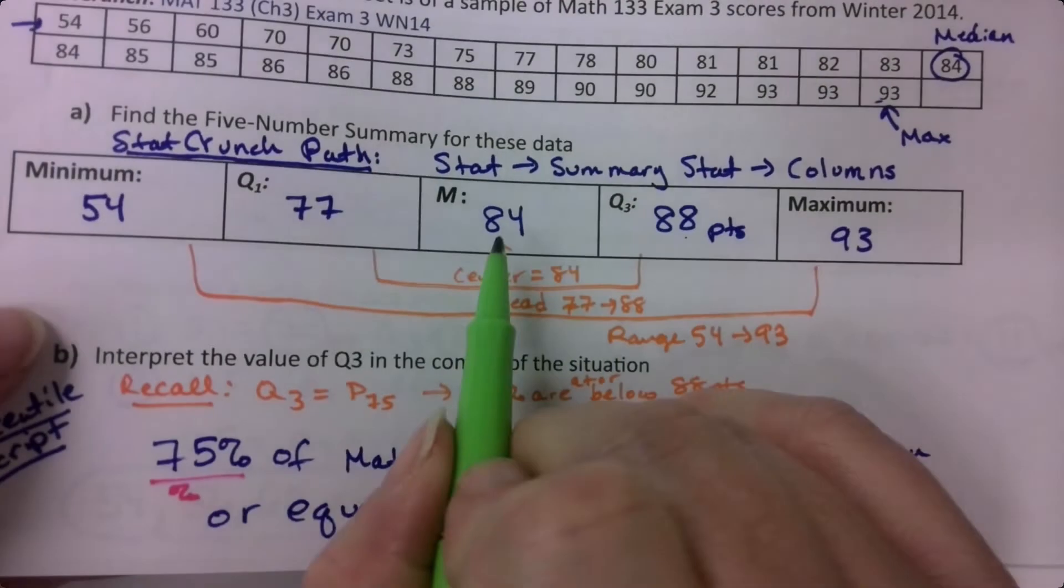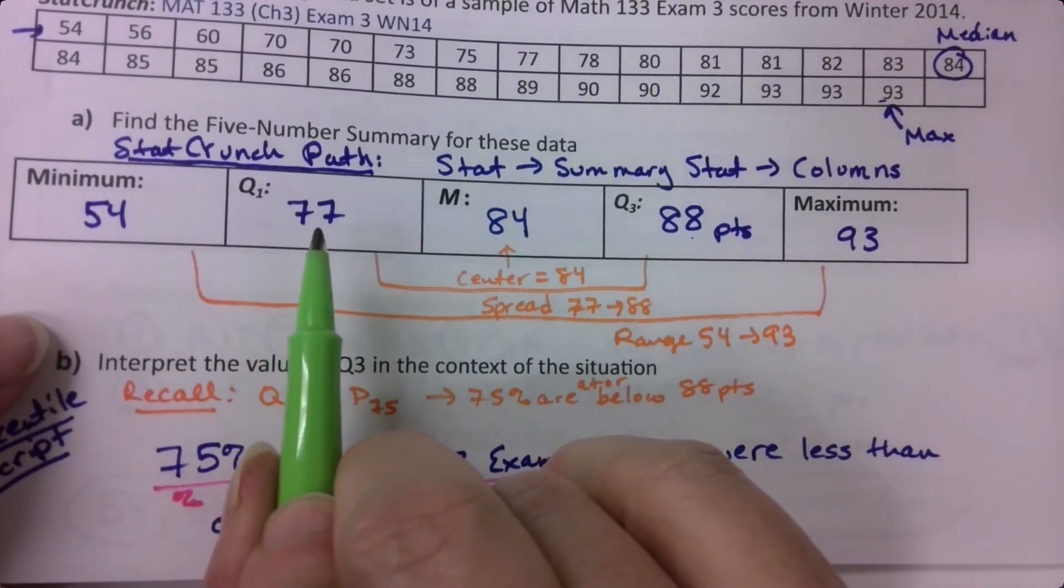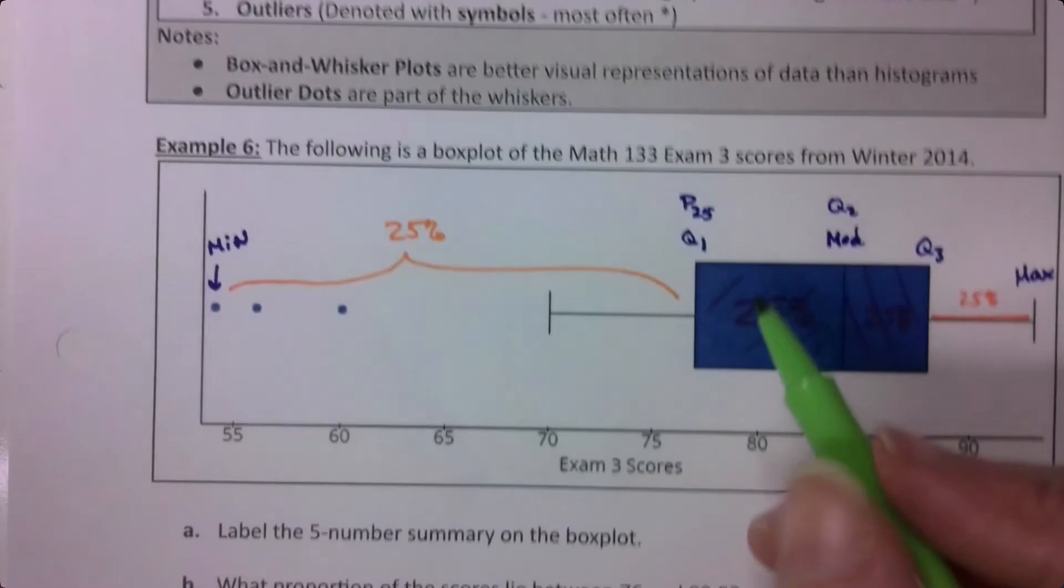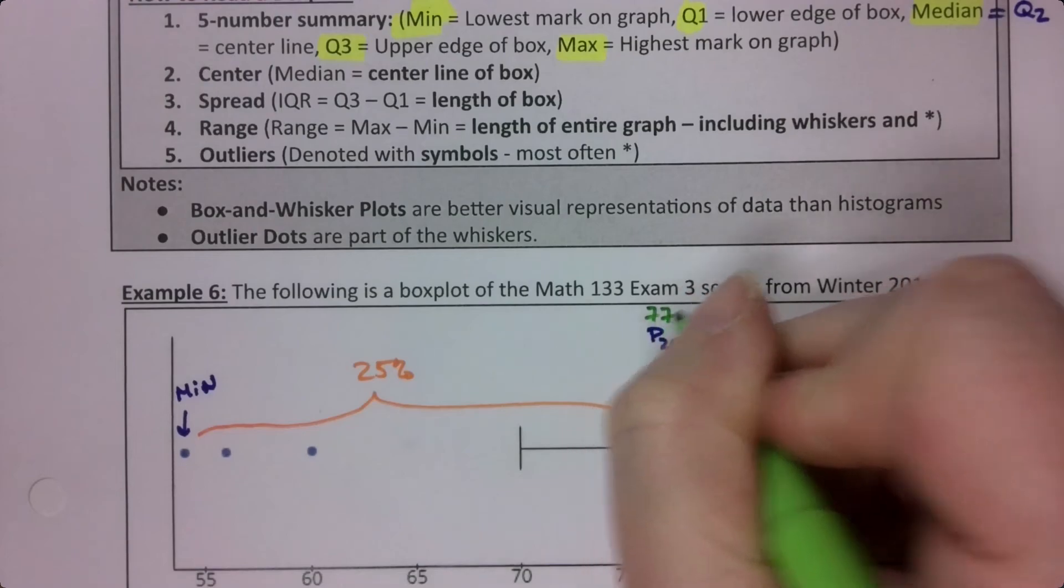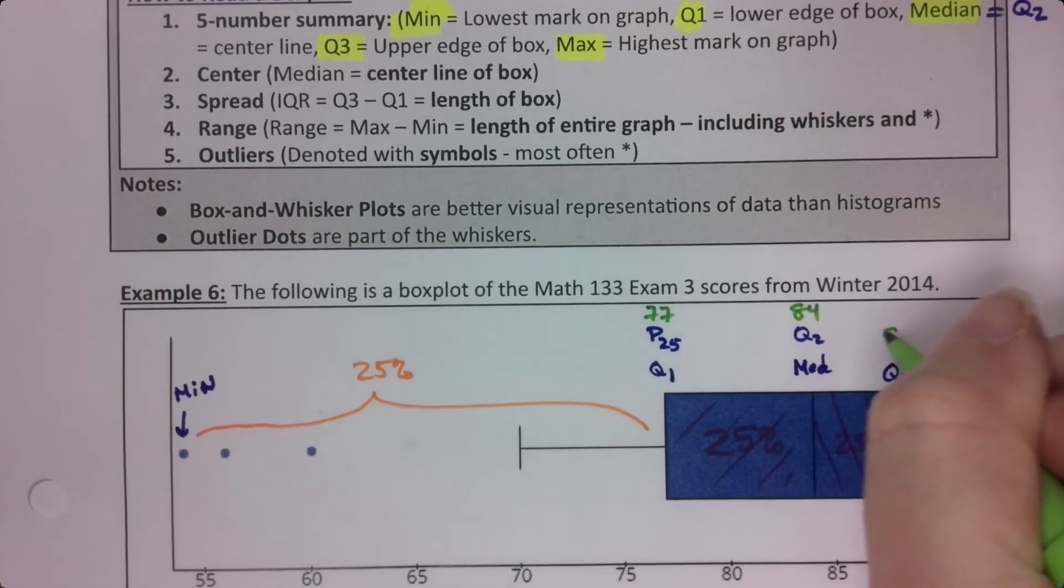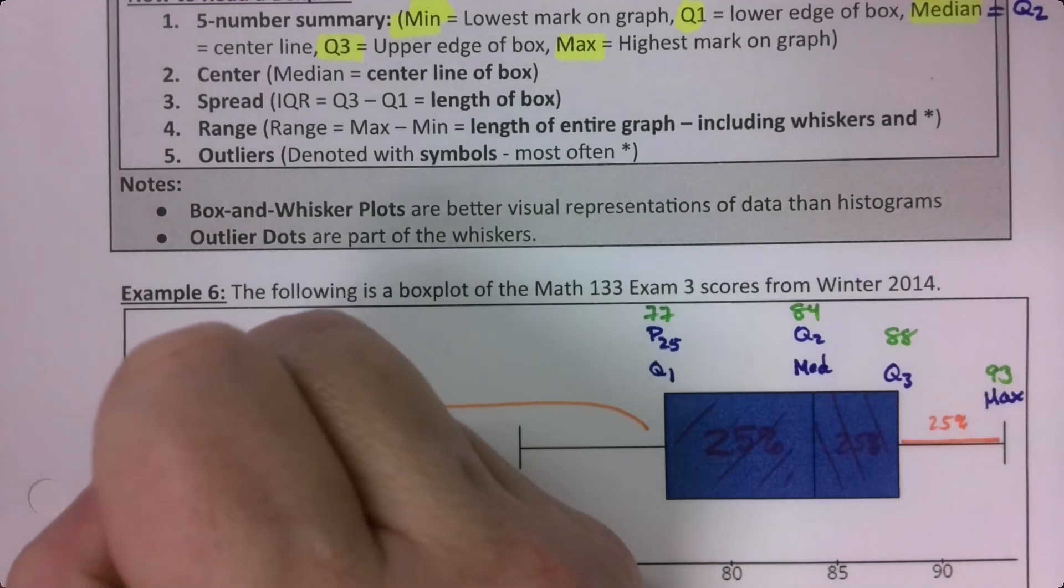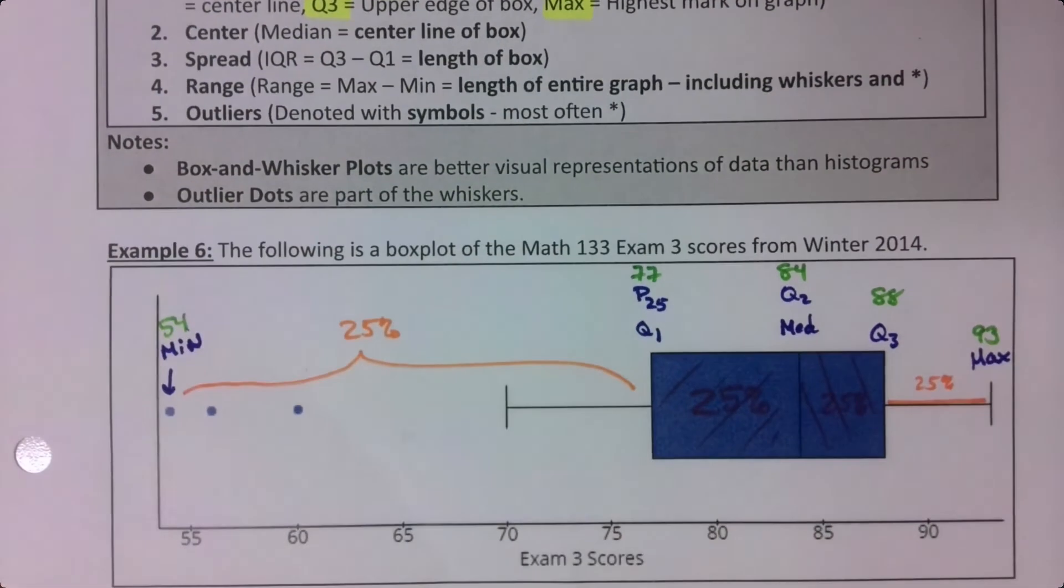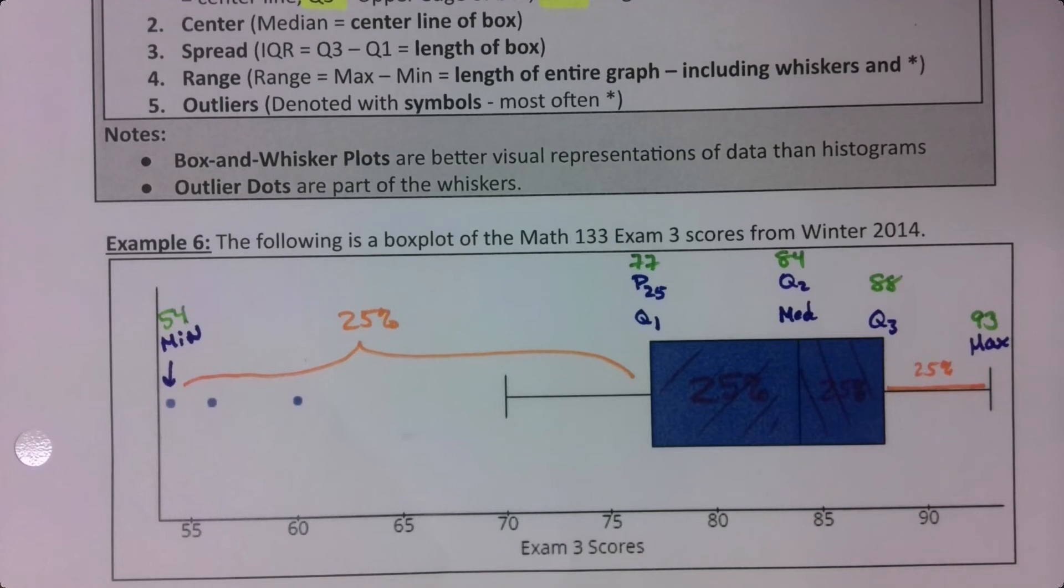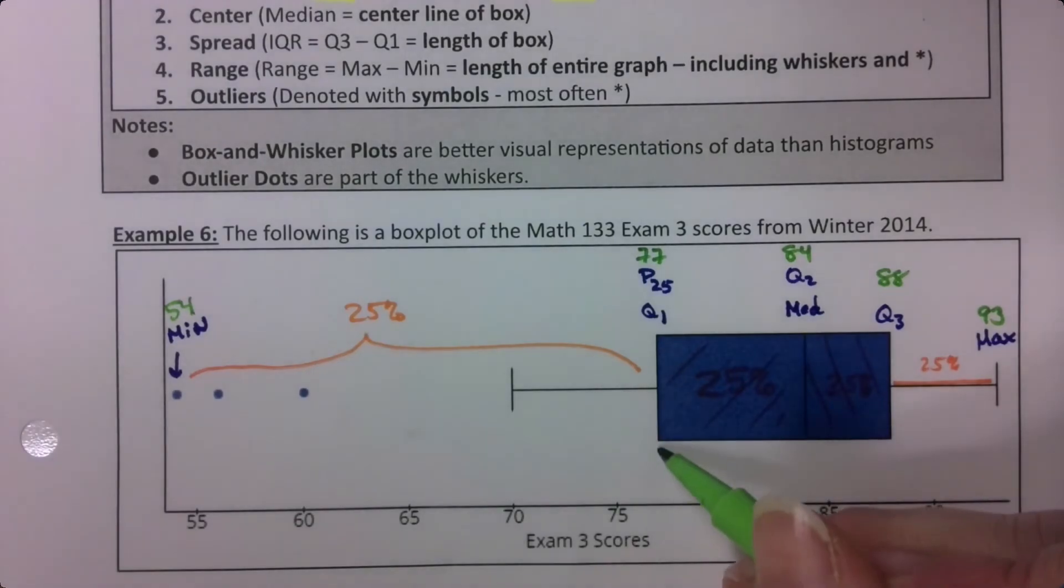The median was 84, Q1 was 77, Q3 was 88. So this was 77, this was 84, this was 88, this was 93, and over here was 54, that was the lowest data point.